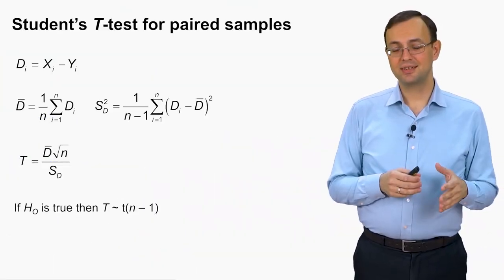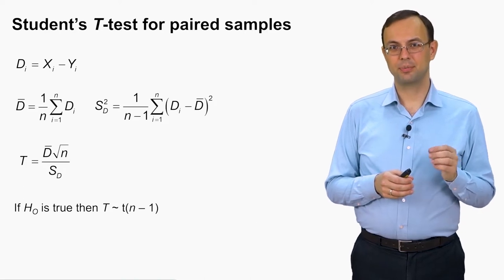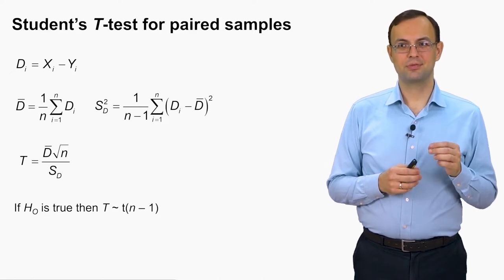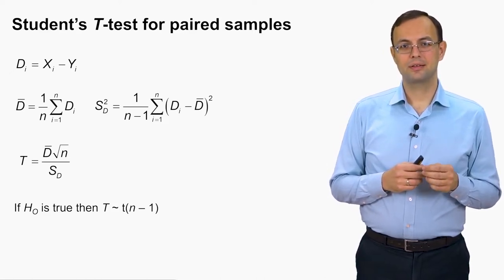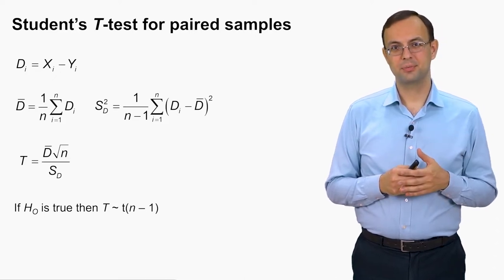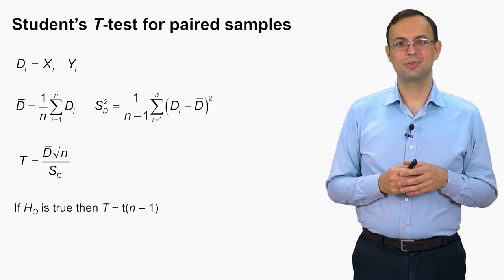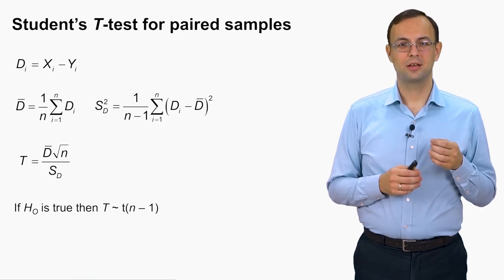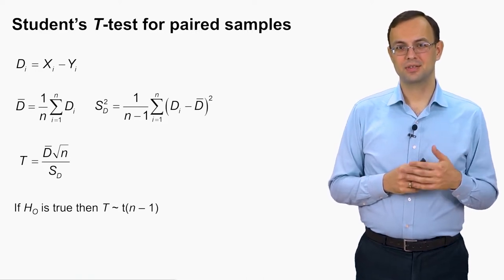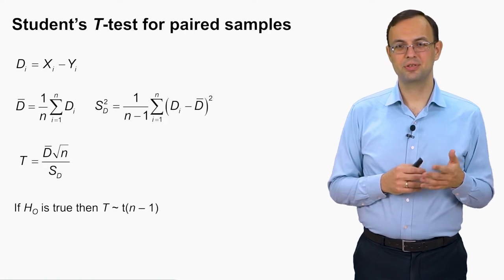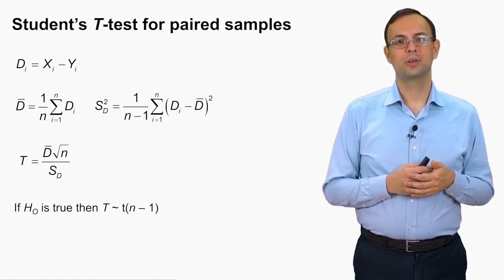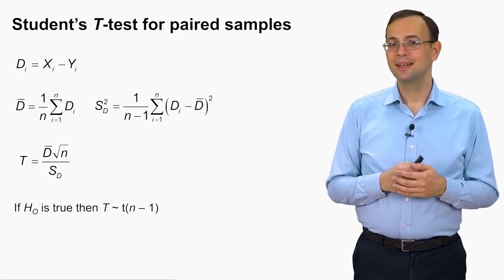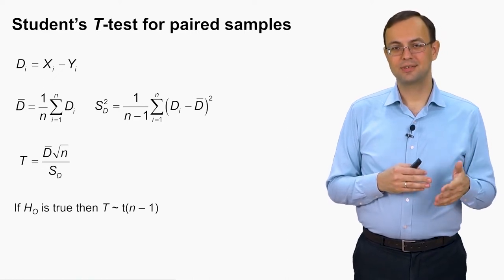The test used to test this hypothesis is called Student's t-test — more precisely, the Student's t-test for paired samples. It is named after the British mathematician Gosset. 'Student' is his pseudonym, and most of his scientific papers were published under this pseudonym. That is why we know his test as Student's test and his distribution as Student's distribution.